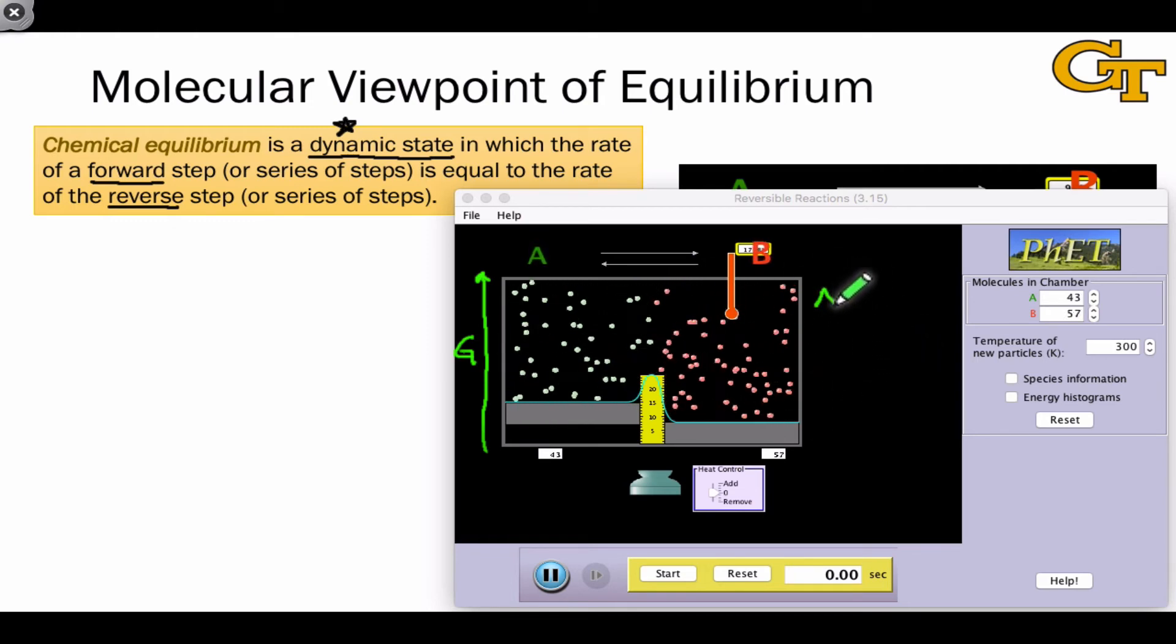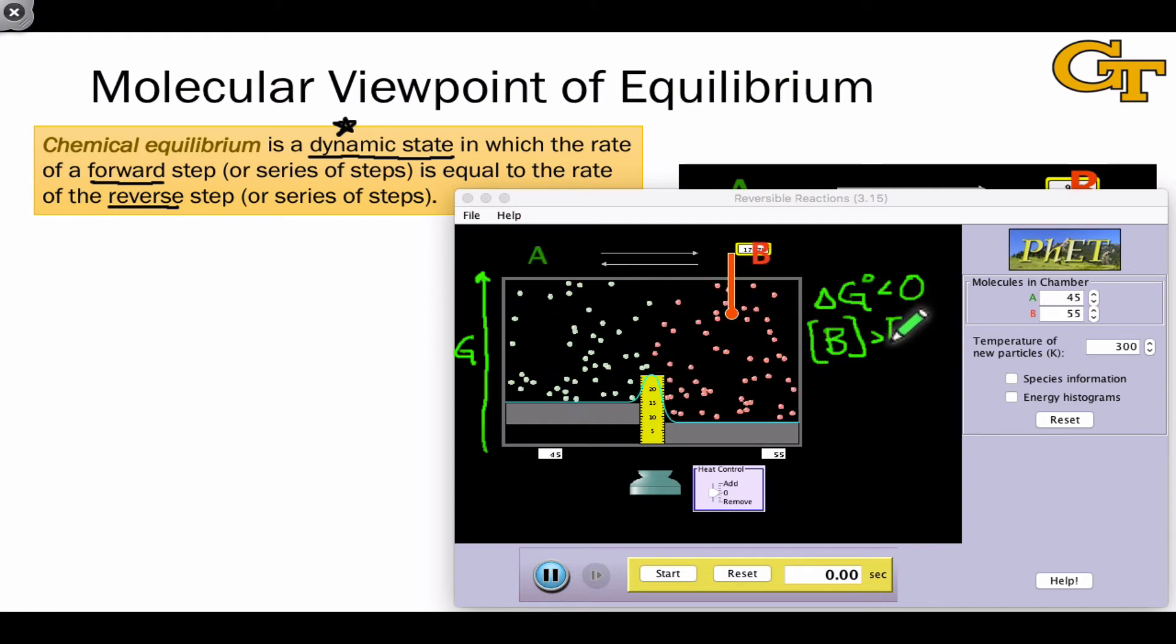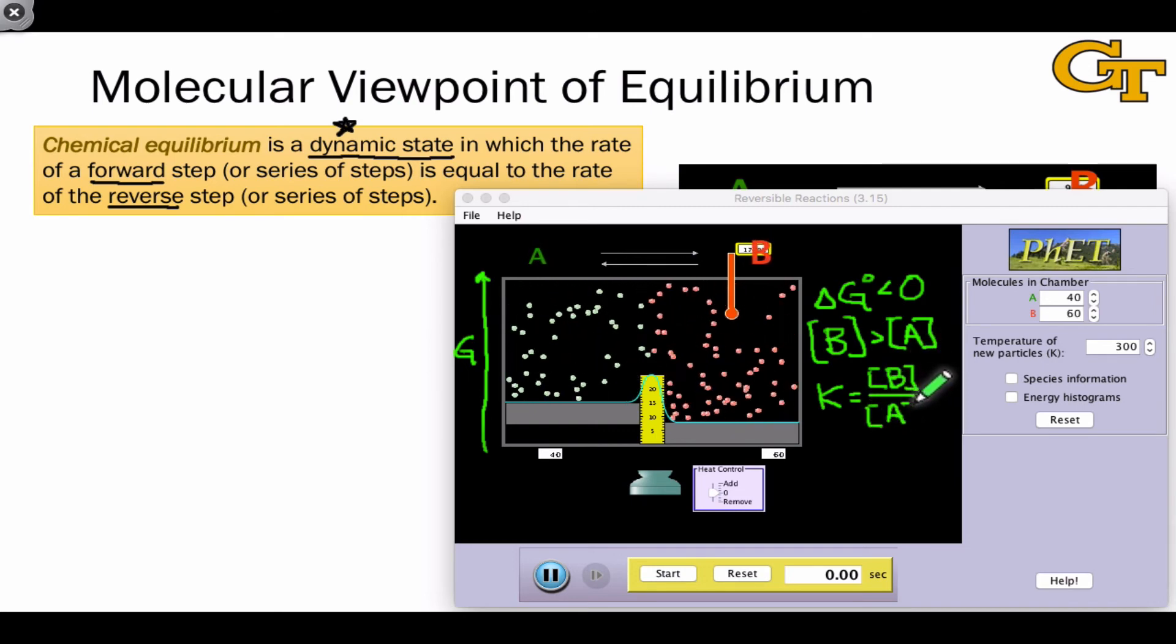Specifically because the delta G for this process is less than zero, as evidenced by the fact that the B well is lower in energy than the A well within the chamber, we can conclude that the concentration or number of molecules of B at equilibrium is greater than the number of molecules of A. We quantify this using the equilibrium constant, saying that the ratio of the concentration or number of molecules of B to the concentration or number of molecules of A is greater than 1 in this case.